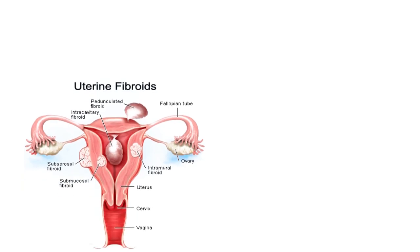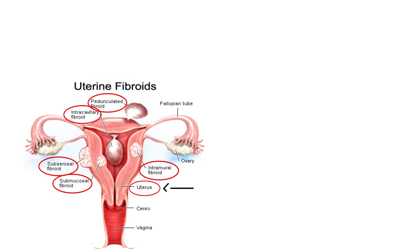Looking at the diagram again — it shows where the fibroids are located and other possible locations as well. The uterus is the main structure where this pathology occurs. The cervix and vagina are also shown, along with an ovary and a fallopian tube. It is an excellent diagram summarizing fibroid anatomy.